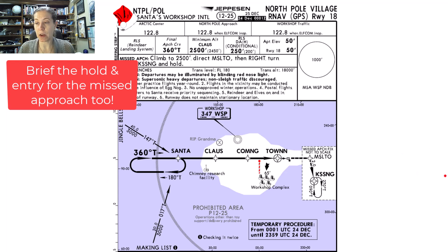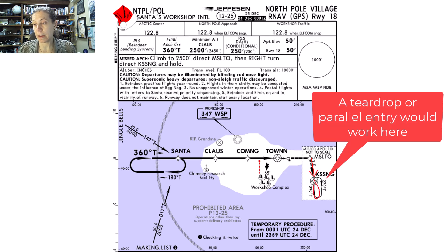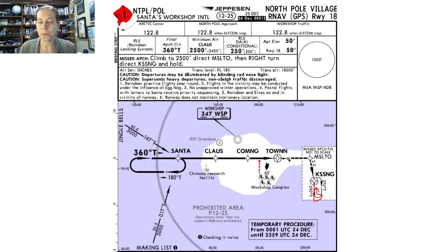So in this example, if I were approaching from Mistletoe intersection and coming up on Kissing, it looks like I would do either a teardrop entry or a parallel entry — fly opposite and then turn through the middle of the hold. I have other videos on holding pattern entries if you want more detail on that. The hold at Kissing is at 2,500 feet — nothing different is indicated — and then I'd figure out what to do next from there.